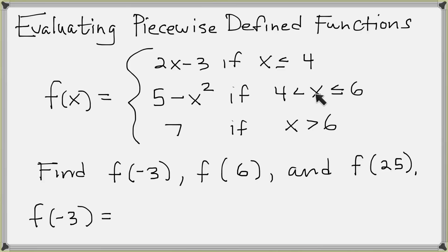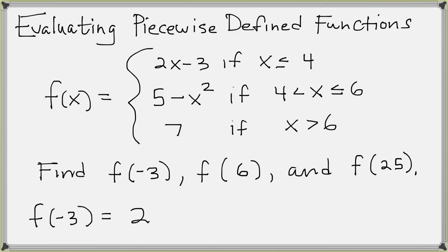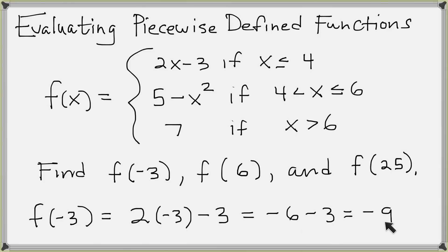Notice that plugging negative 3 into the other conditions gives false statements — the second condition would say 4 is less than negative 3 and less than or equal to 6, which is false. And the third condition would say negative 3 is greater than 6, also false. So the first condition holds true for negative 3. We use the corresponding formula: plugging negative 3 in for x in 2x minus 3 gives 2 times negative 3 minus 3, which equals negative 9. So f of negative 3 equals negative 9.